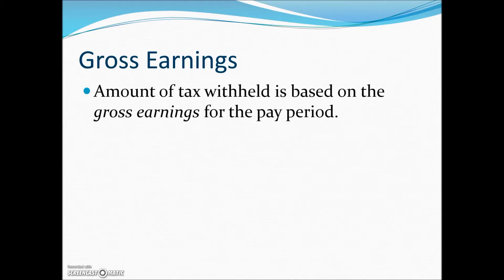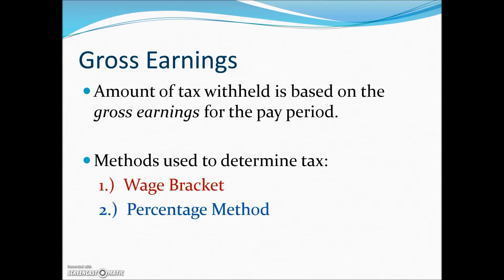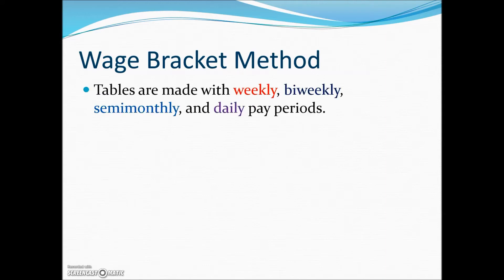This would be used to determine the amount of tax obligation, and being married they'd be at a lower tax rate, plus because of having to provide for three children they would be taxed at a lower amount. Gross earnings are the basis for the tax amount being held, and generally a person with higher gross earnings is going to have more withheld for taxes. There are two methods used to determine the amount of tax.